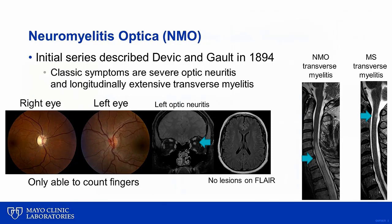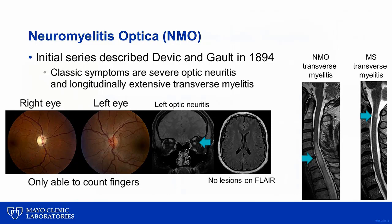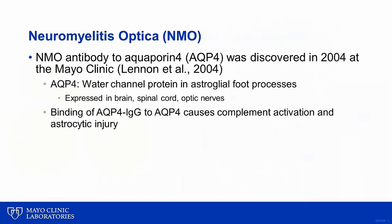Patients with NMO will often also have transverse myelitis extending more than three segments, compared to transverse myelitis lesions in MS that are typically short. For over a century, there was a debate as to whether NMO was a subtype of multiple sclerosis or a separate entity. In 2004, Vanda Lennon and colleagues at the Mayo Clinic found that the antibody against aquaporin-4 is both a biomarker and pathologic cause of NMO, which cemented NMO as a distinct entity from MS.